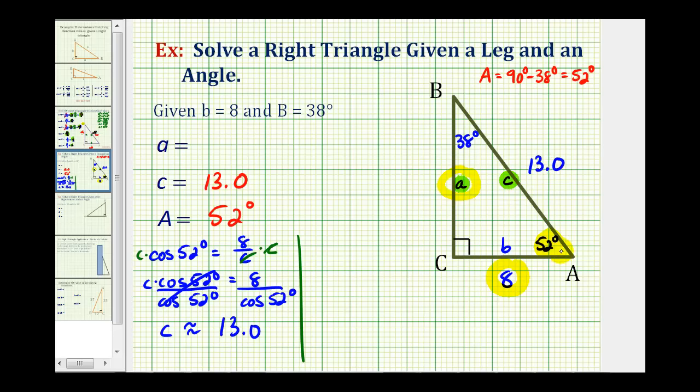Referencing angle A, notice how side a is the opposite side, and side b is the adjacent side. The trig function that uses the opposite side and adjacent side of a right triangle is tangent.